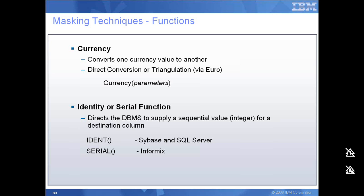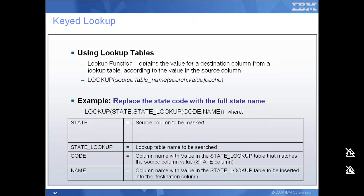In situations where I would like to do data privacy implementation and I have a set of lookup tables and would like to make modifications based upon values existing in a lookup table, I use what is called a keyed lookup. I specify the source column to be masked, the lookup table name which has to be searched, and the columns inside the lookup table which will have the values needed for doing the actual masking.